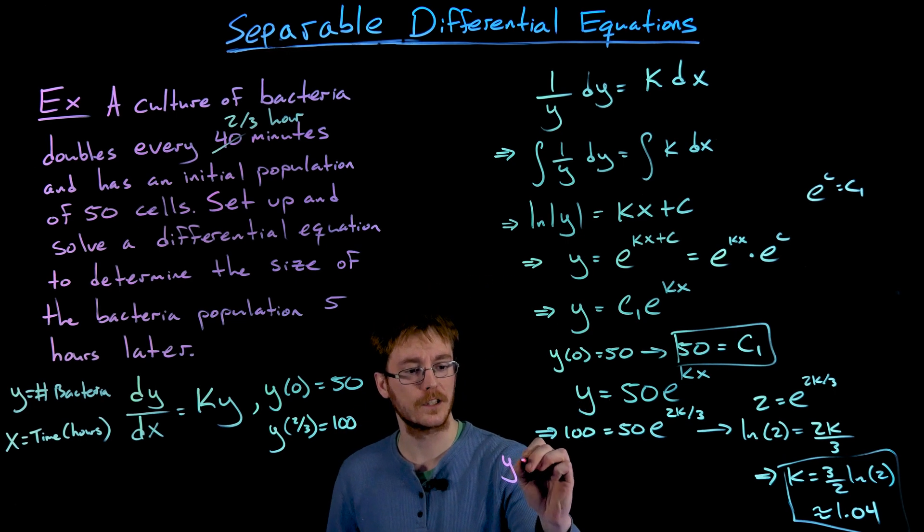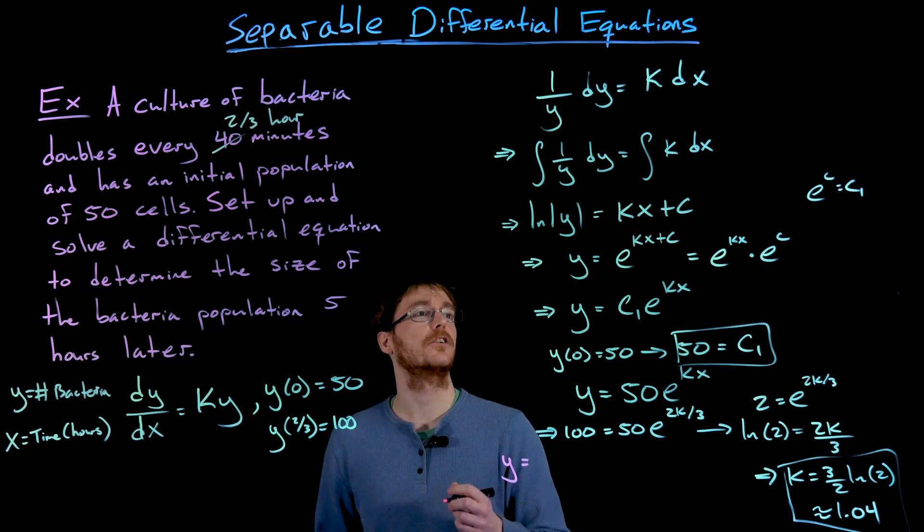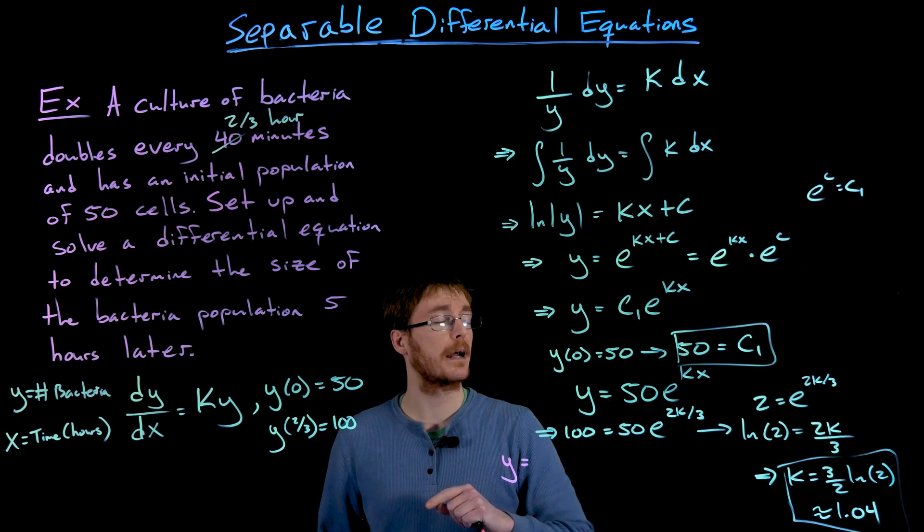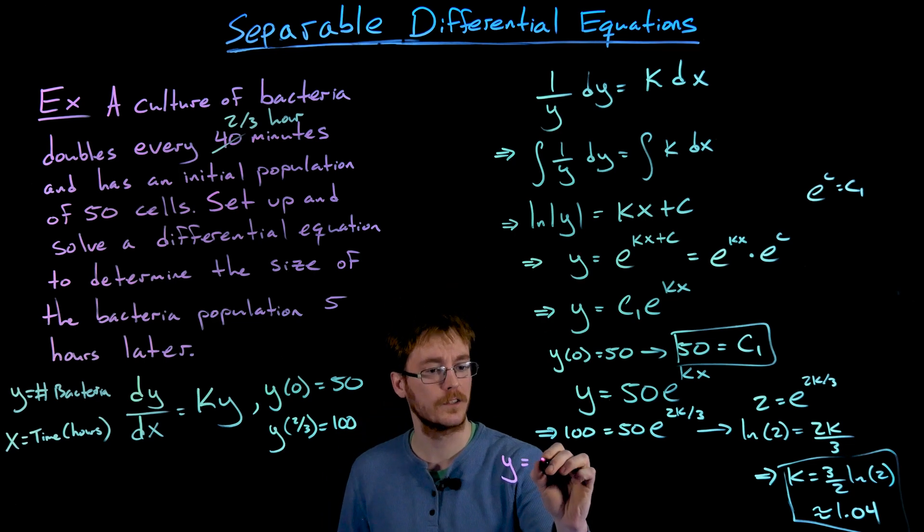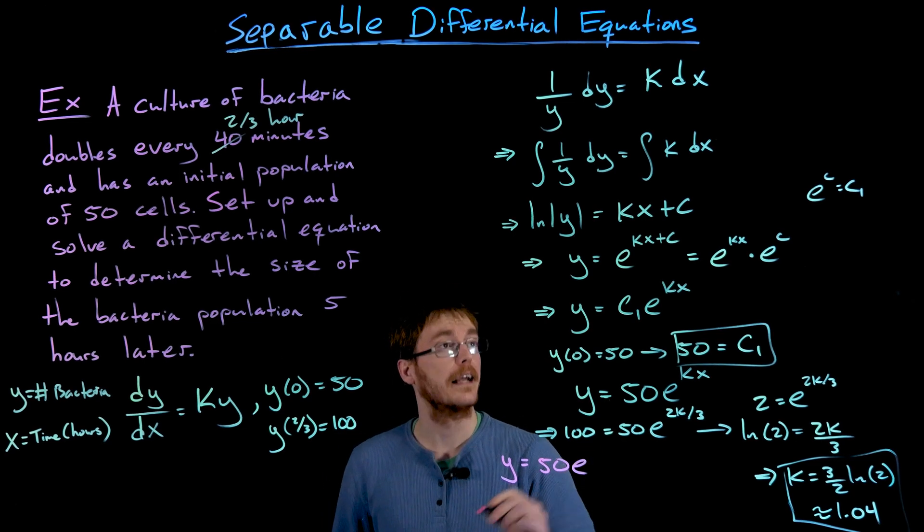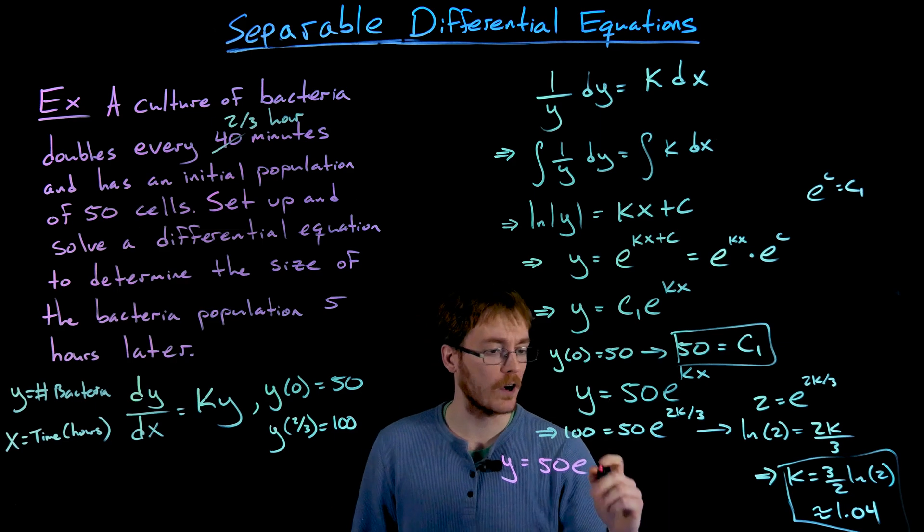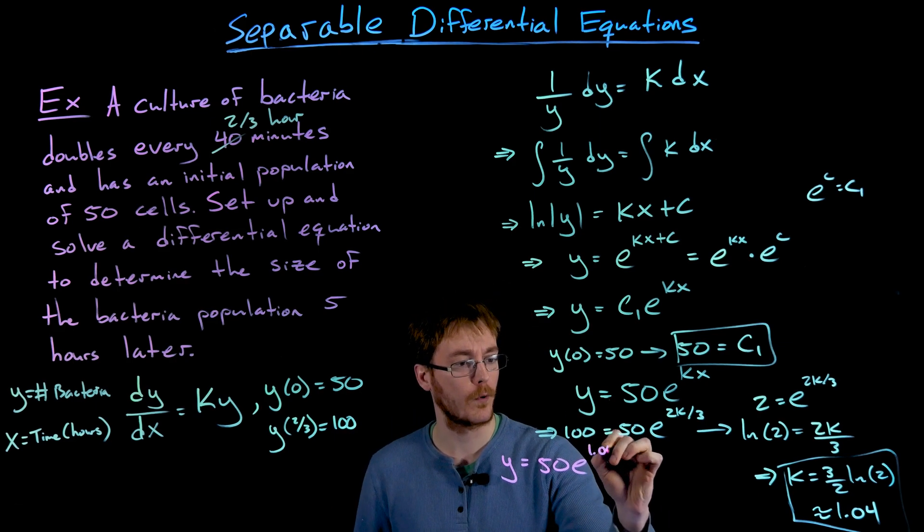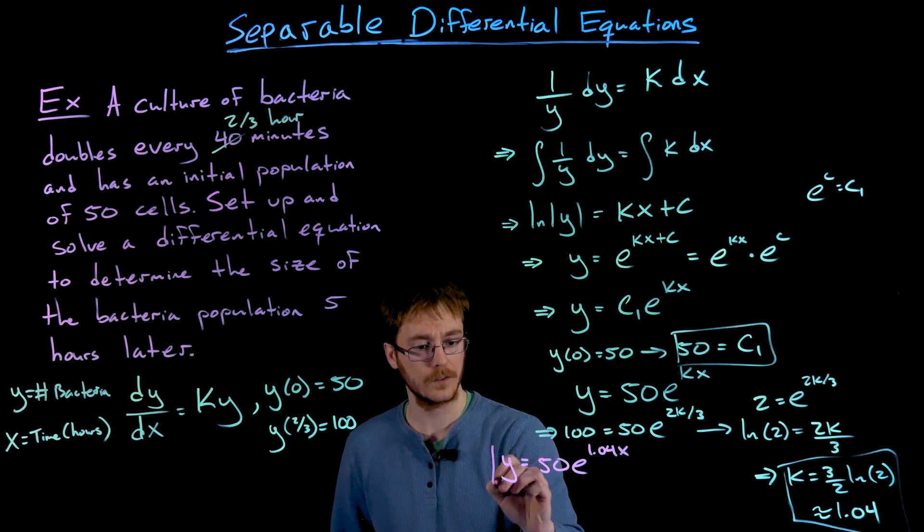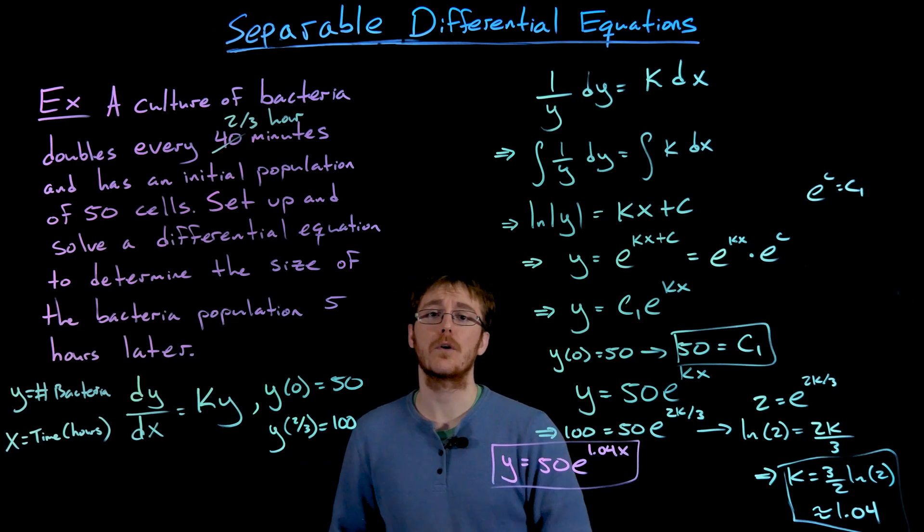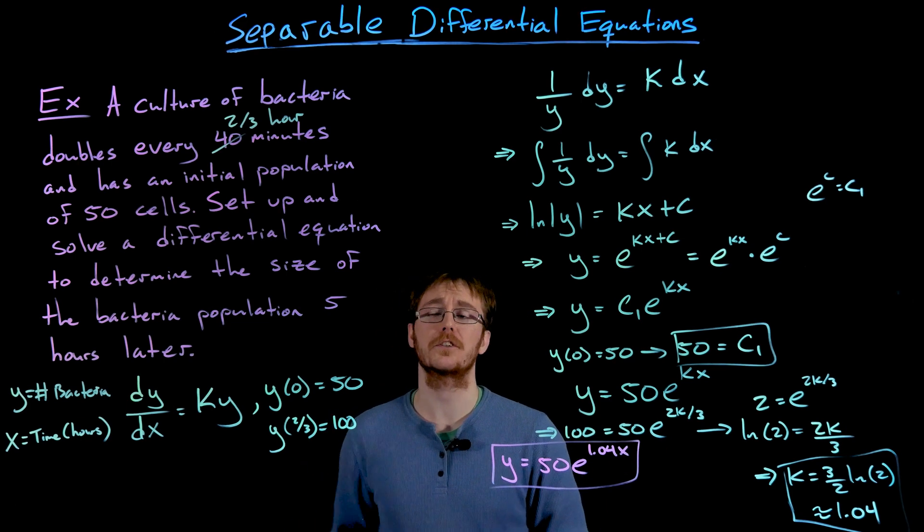So y is going to be equal to c1 times e to the power of kx. We found c1 to be 50 and e to the power of kx. We're using that approximate value for k here, about 1.04. So this is the solution to our differential equation, our particular solution.